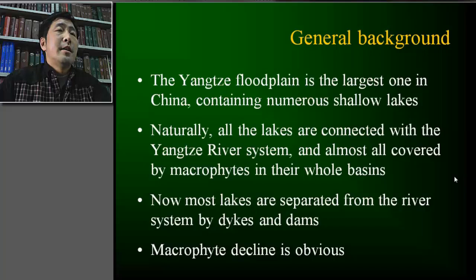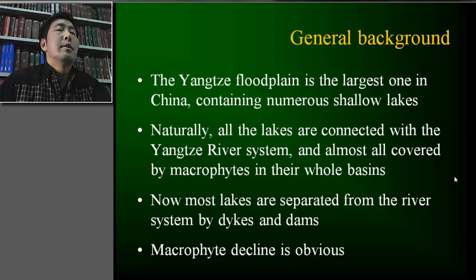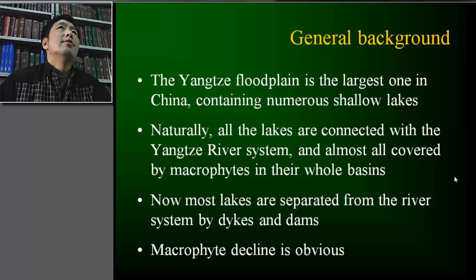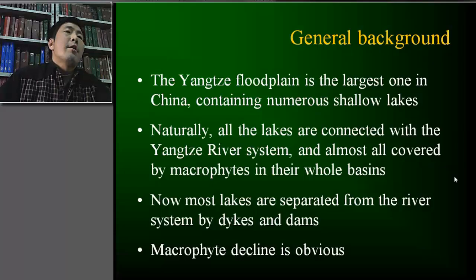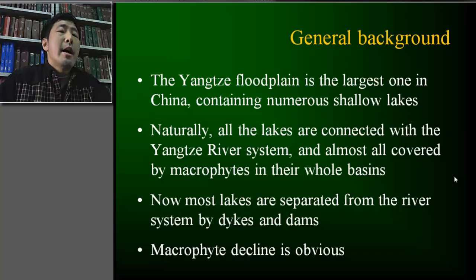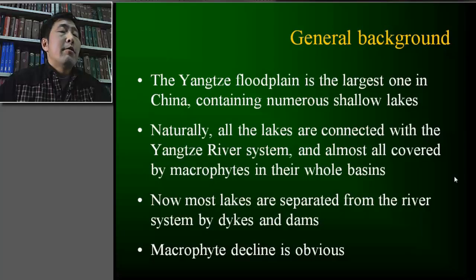Before I propose the hypothesis, the general background I want to mention is that the Yangtze River floodplain is the largest one in China, containing numerous shallow lakes — usually called the middle-lower reaches of the Yangtze River shallow lake groups. Naturally, all these lakes are connected with the Yangtze River system and were almost all covered by macrophytes in their whole basin, as documented in research before the 1980s. However, from the 1950s, more and more dams and dikes were built to control frequent flooding, so many lakes have now been separated from the river system. From the 1980s, lakes in this area have become rapidly and seriously eutrophic, with macrophyte decline very obvious.